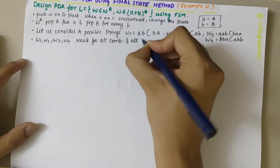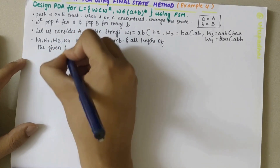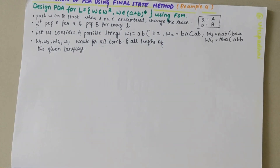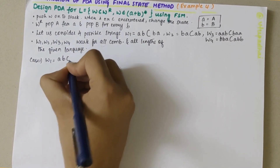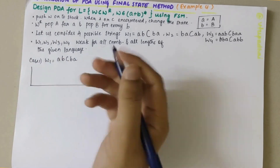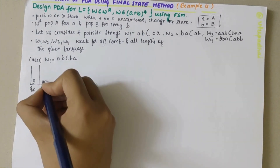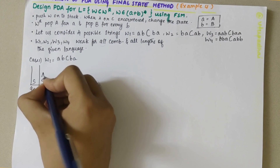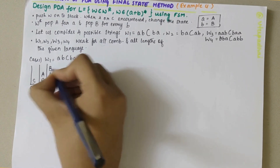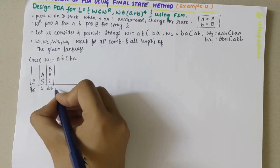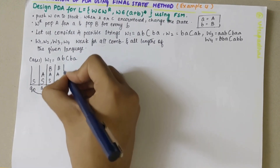These W1, W2, W3, W4 cover all combinations and lengths of the given language, that's why we are considering these four strings. Starting with case 1, W1 = A B C B A. Initially the stack is in Q0 state and it is empty. When A is encountered on top of stack, we add capital A. When B is encountered, we add capital B. After pushing A and B, we encounter C.